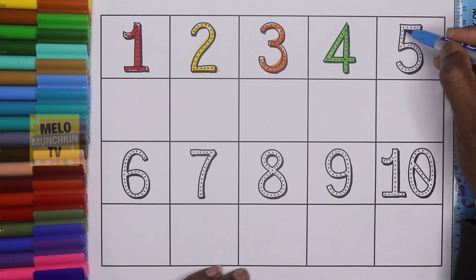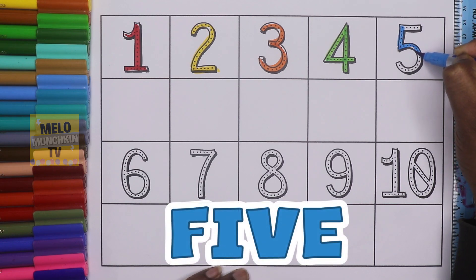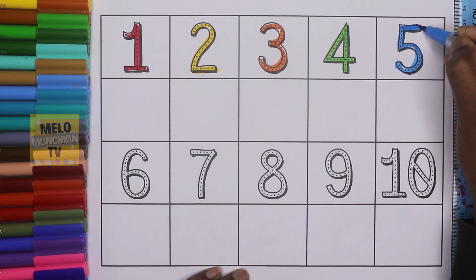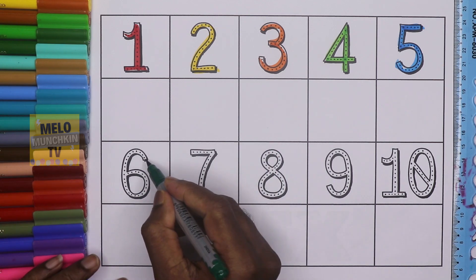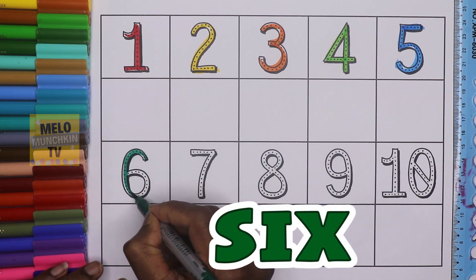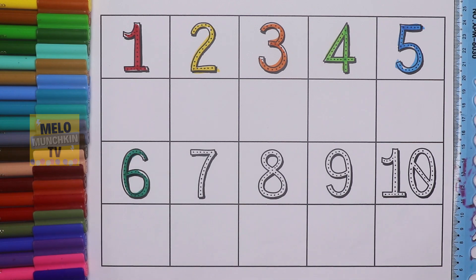Blue color, this is number five: F-I-V-E, five. Dark green color, six: S-I-X, six.